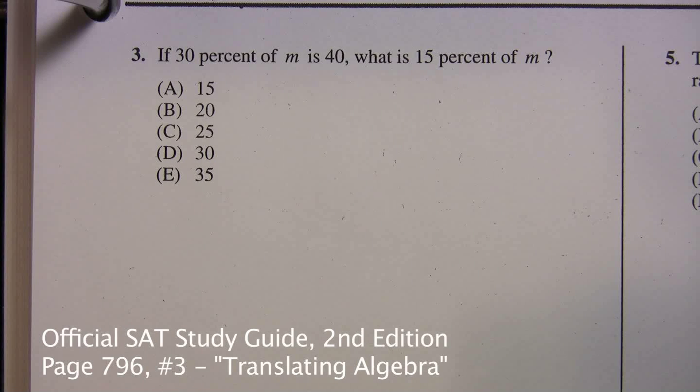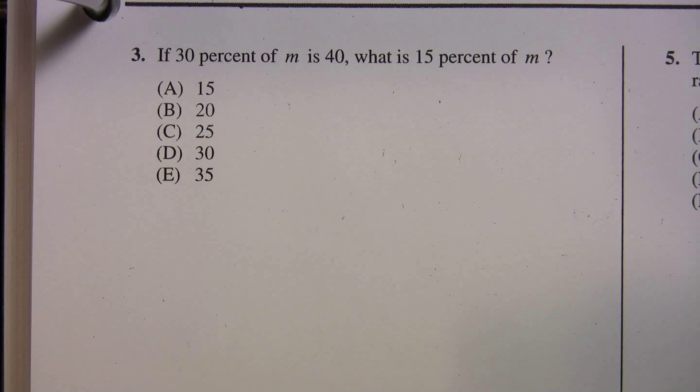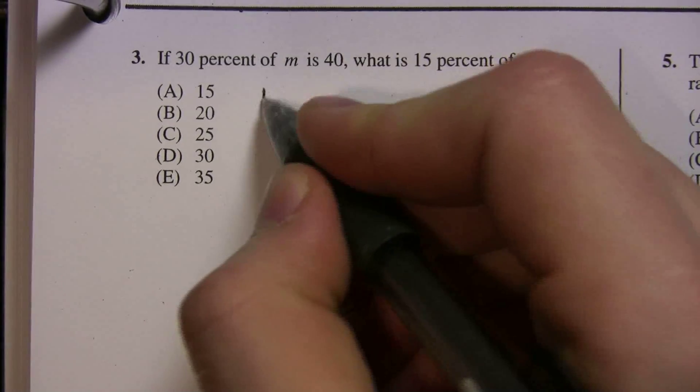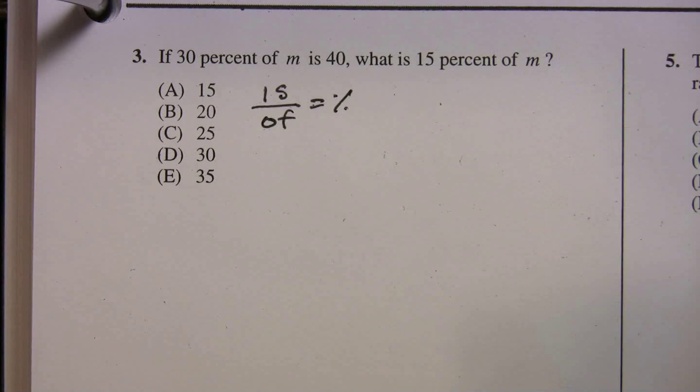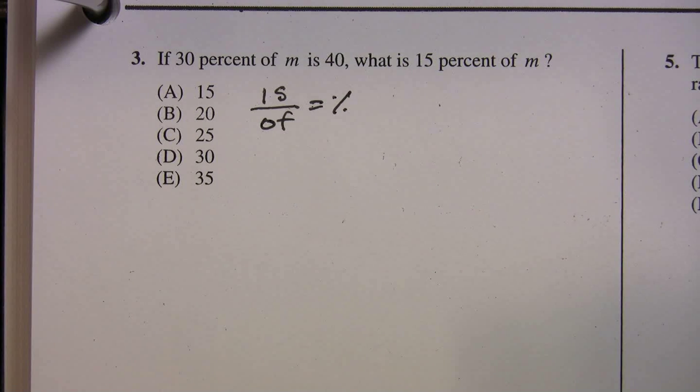We've got a word problem here, and it's got percents in it too. We're on page 796, number 3. It reads, if 30% of M is 40, what is 15% of M? I chose this problem because usually in school you're taught the whole formula is over of equals percent. And there's nothing wrong with that. I just was never a big fan of that because I always found it a little confusing. So let me show you another way you can do this problem.